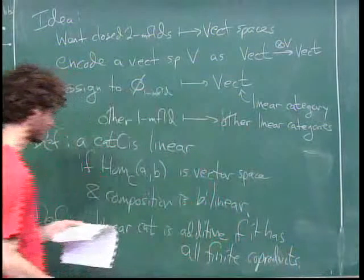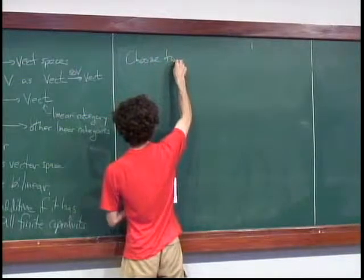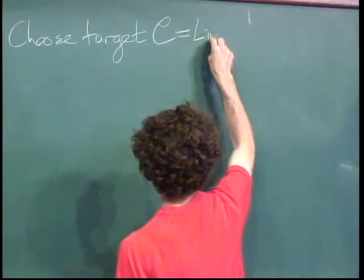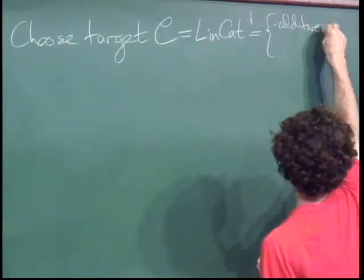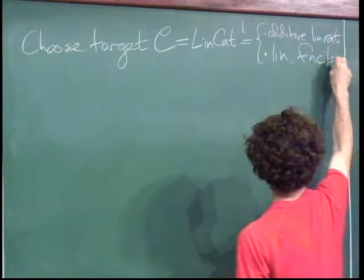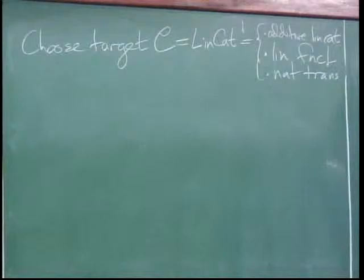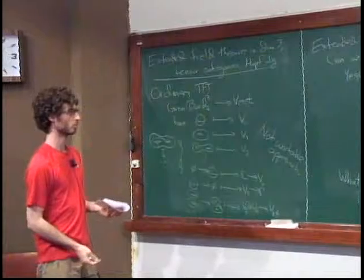We can now choose the target 2-category 𝒞, which I'll denote LinCat. This has objects which are additive linear categories, morphisms which are linear functors, and 2-morphisms which are natural transformations of linear functors. This does implement what we wanted in terms of recovering data on closed 2-manifolds and the 3-manifold bordisms between them.